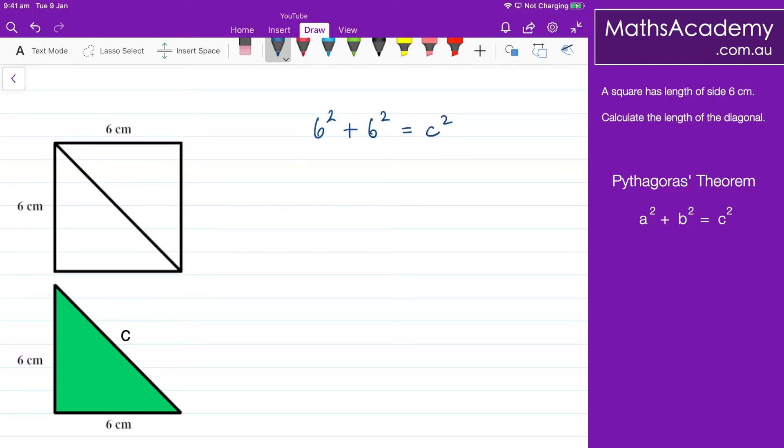Well 6 squared that's 36 plus another 36. That's obviously equal to c squared. Just doing a little bit of rearranging and adding up here we've got that c squared is equal to 72 and therefore c is equal to the square root of 72.